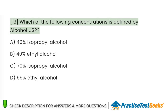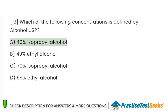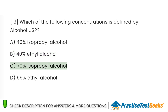Which of the following concentrations is defined by alcohol USP? A. 40% isopropyl alcohol. B. 40% ethyl alcohol. C. 70% isopropyl alcohol. D. 95% ethyl alcohol.